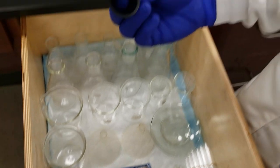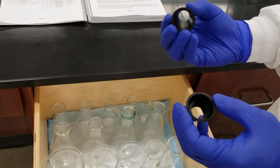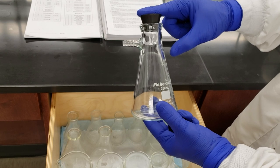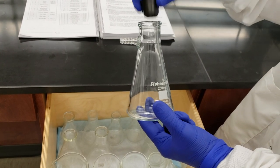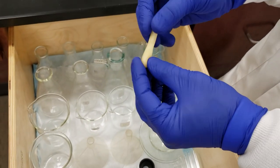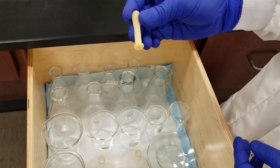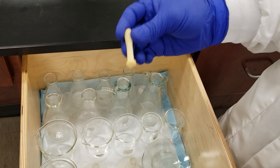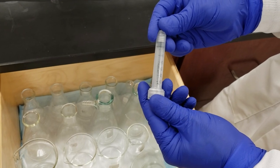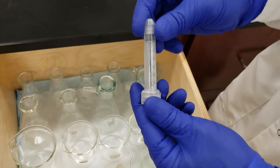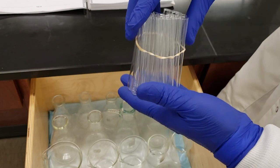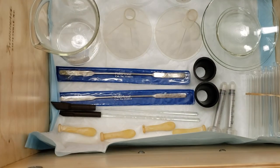Next are neoprene adapters to make a seal with our Erlenmeyer flask during suction filtration. We have rubber pipette bulbs that pair with glass pipettes to draw up liquids. We have two 3 mL syringes for doling out liquids during reactions, and a total of 20 test tubes neatly arranged with a rubber band. That's it for drawer number one.